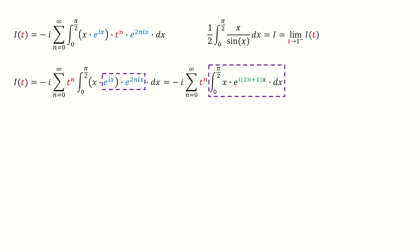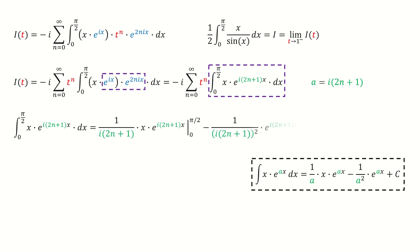Now let's calculate this integral. Recall the result for this indefinite integral. Here we set a equals to i times 2n plus 1. After plug-in a, we got here. Then we just evaluate at the lower and upper limit. We got this result for this integral. Then we plug in to replace it.